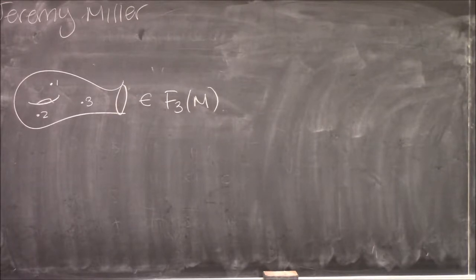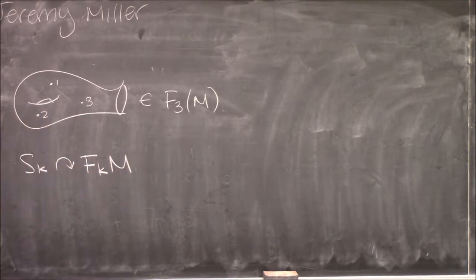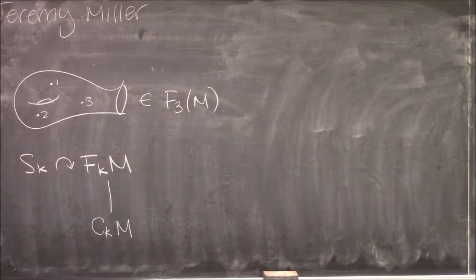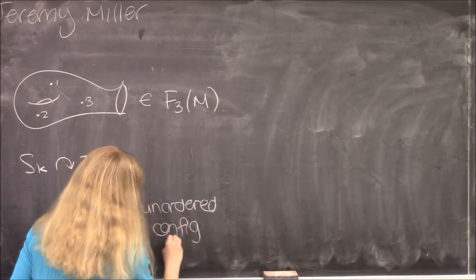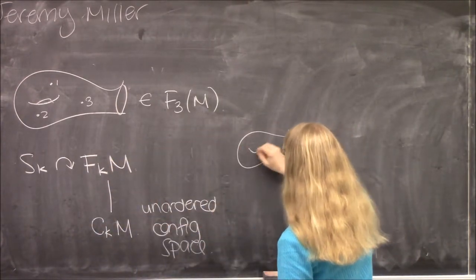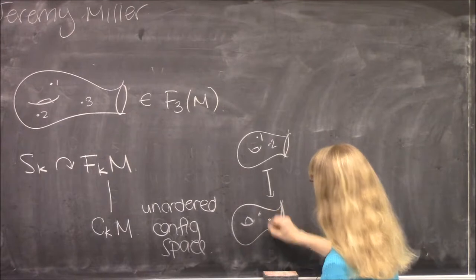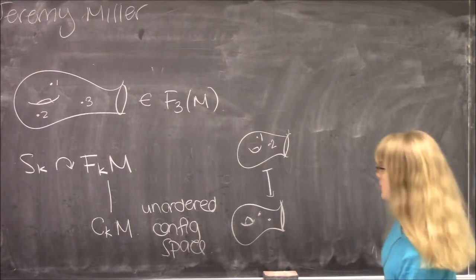These configuration spaces come with a nice action of the symmetric group: the symmetric group acts by permuting the labels on the points, and this is a nice covering action. The quotient spaces are the unordered configuration spaces. Passing to this quotient is tantamount to just forgetting the labels on the points, and the quotient space is the space of unordered K-element sets of points in the manifold.